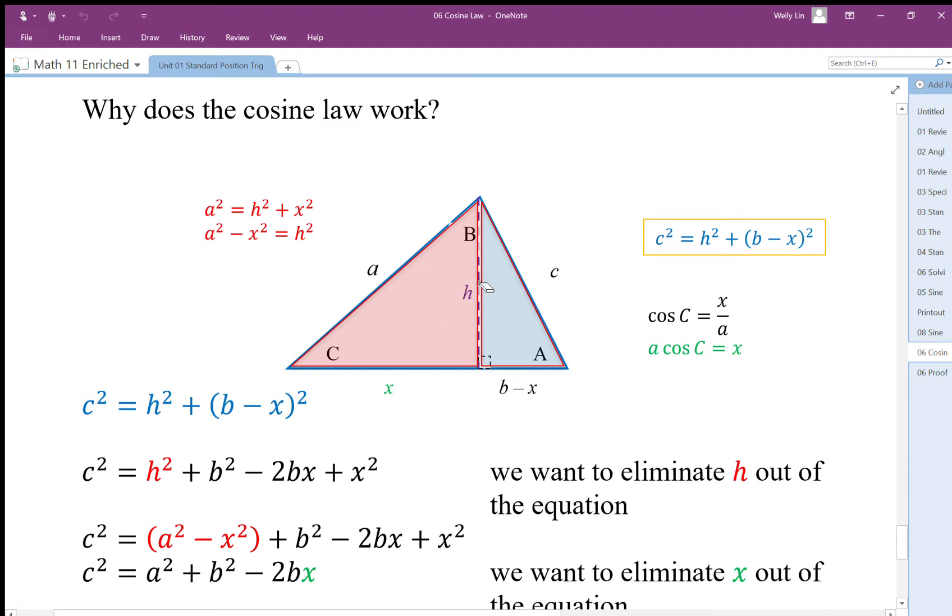The red part is going to have hypotenuse a. They're going to share the height, and this side length we're going to call x. For this side of the triangle, this is going to be our c side. It's going to share the height h, and the bottom side b is going to be missing this x part, so we're going to call this b minus x.